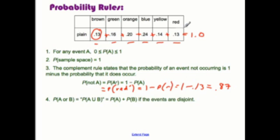The probability of not getting red is simply the probability of everything else happening. So isn't it easier instead of adding up .13, .16, .20, .24, .14, to just do 1 minus the probability of red actually happening?